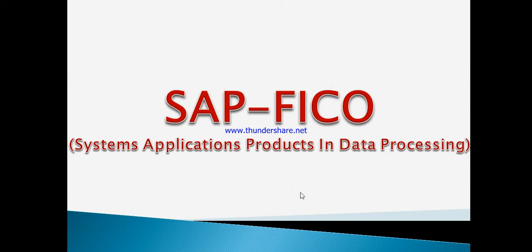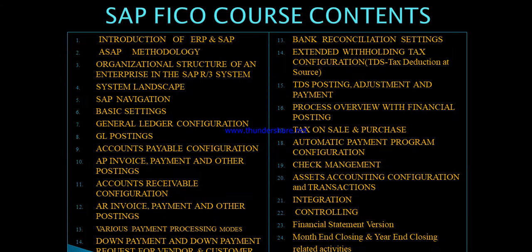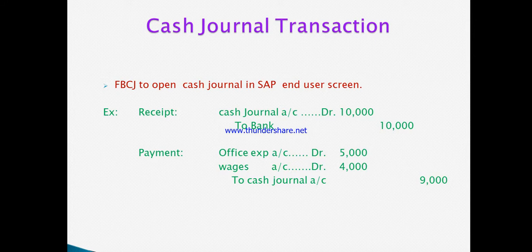Hello everyone, welcome to Learn SAP FICO. Today we will learn about cash journal transactions. In a previous video we learned about the cash journal configuration part; now we will learn about cash journal transactions. The T-code is FBCJ to open the cash journal in the SAP end-user screen.